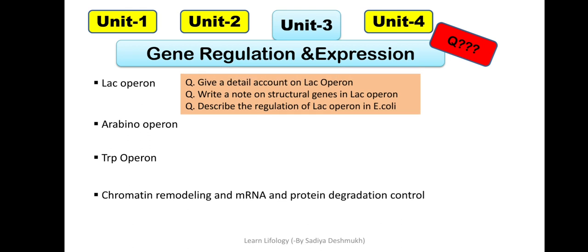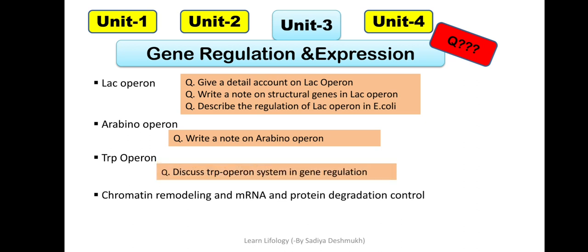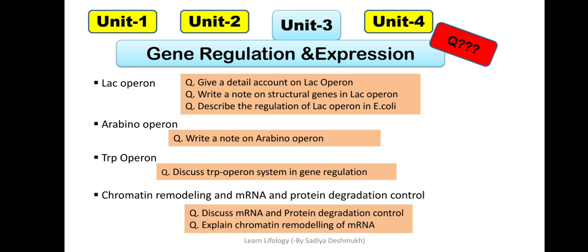What questions are asked? Here direct questions come: detailed account of lac operon, write a note on structural genes in lac operon. When you understand the structure, I am going to start with lac operon first, so you should study that first. Describe the regulation of lac operon in E.coli. Arabinose operon has very rare questions. From trp operon, gene regulation is asked: operon system and gene regulation. Again, everywhere gene regulation is very important; you have to pay a lot of attention to regulation. In chromatin remodeling, you will have: mRNA, protein degradation control, and chromatin modeling. Direct questions come from this.